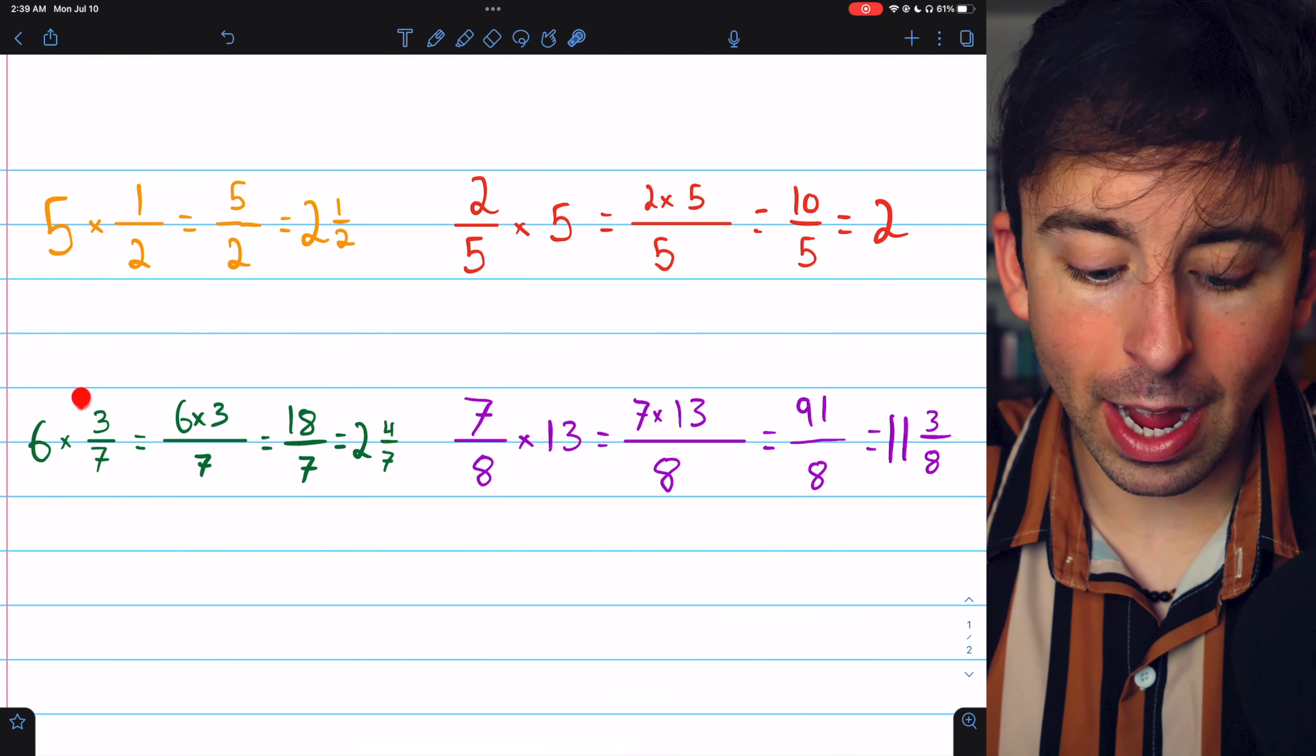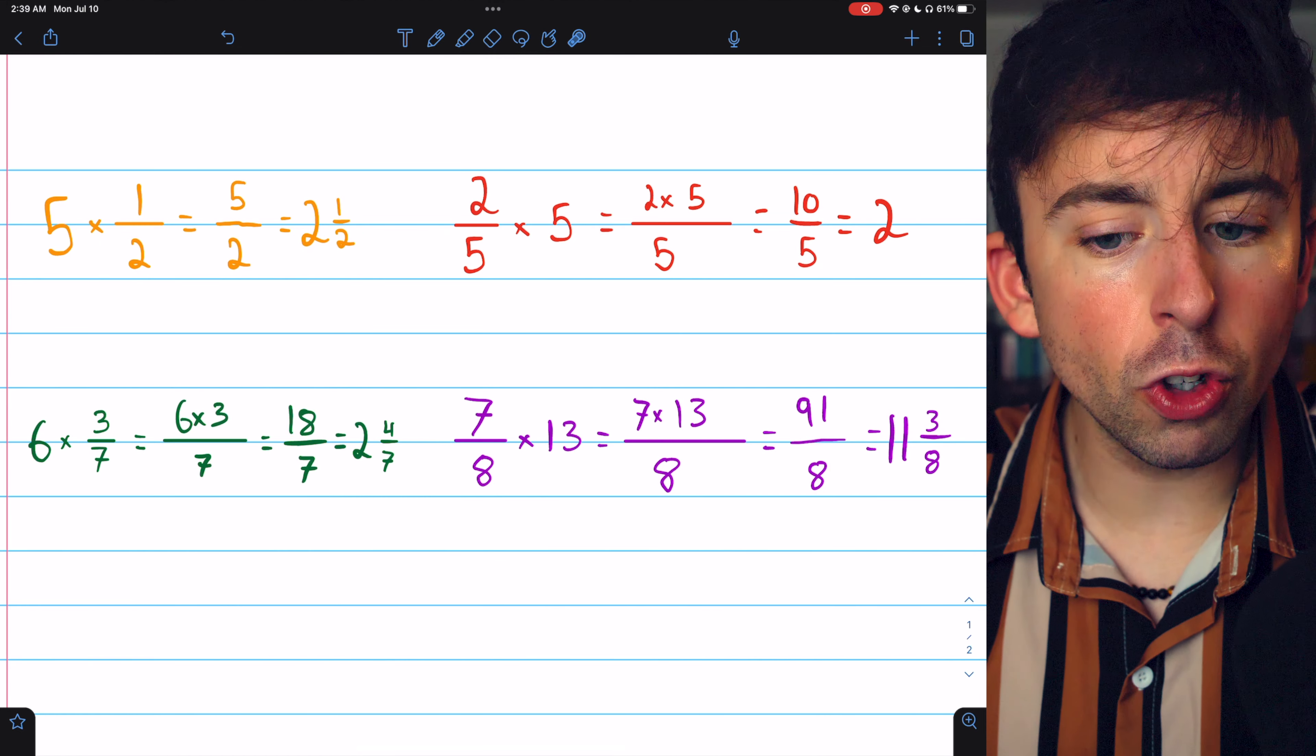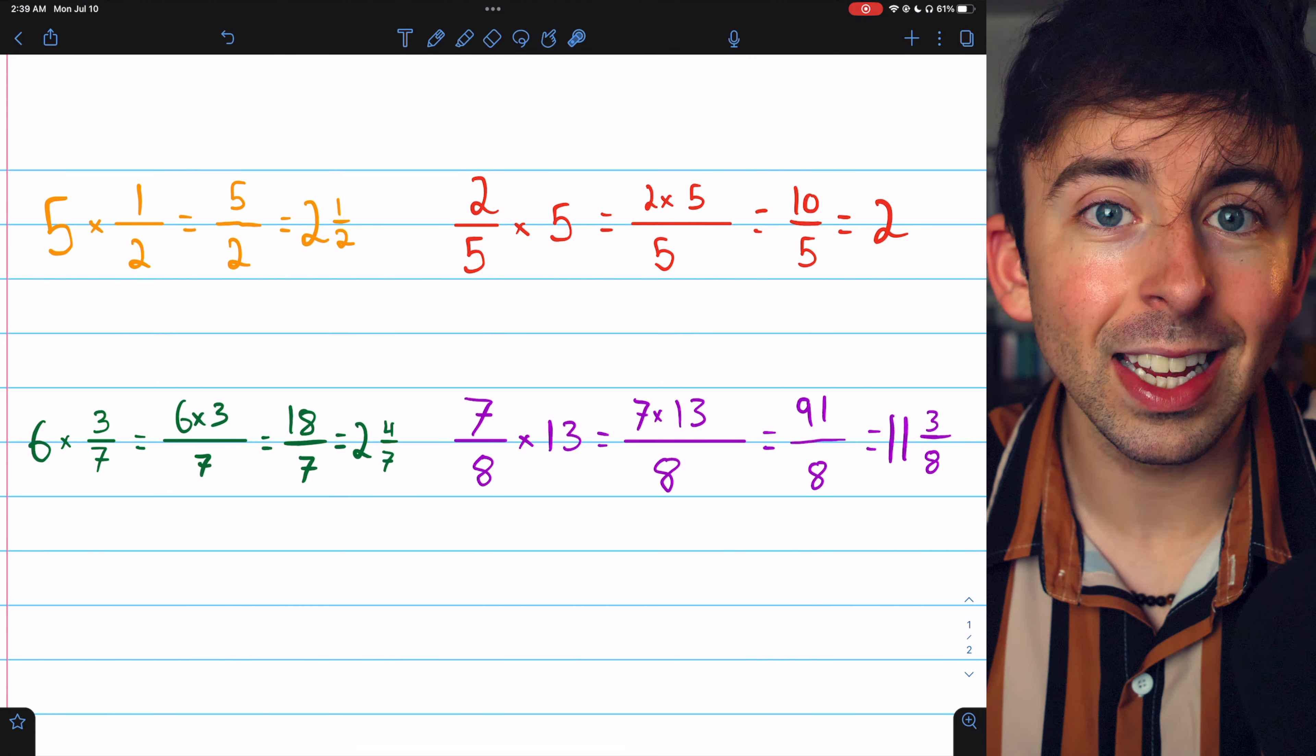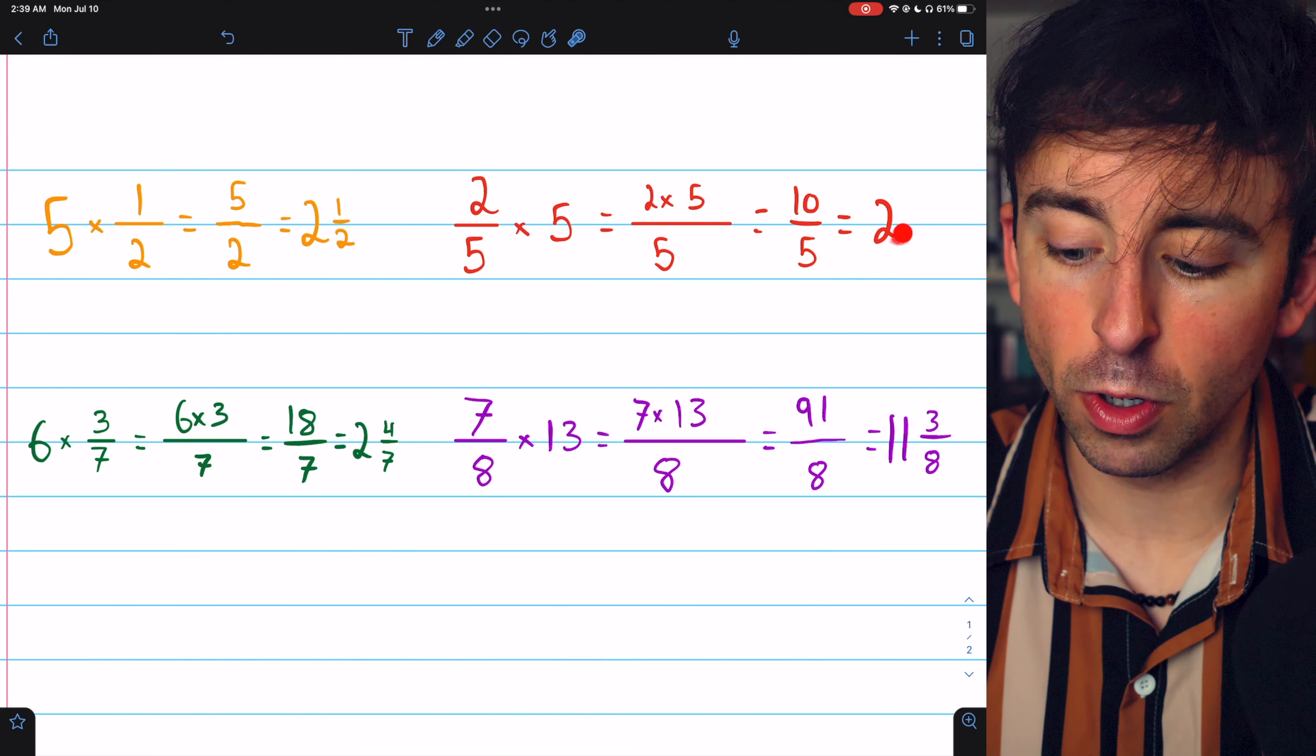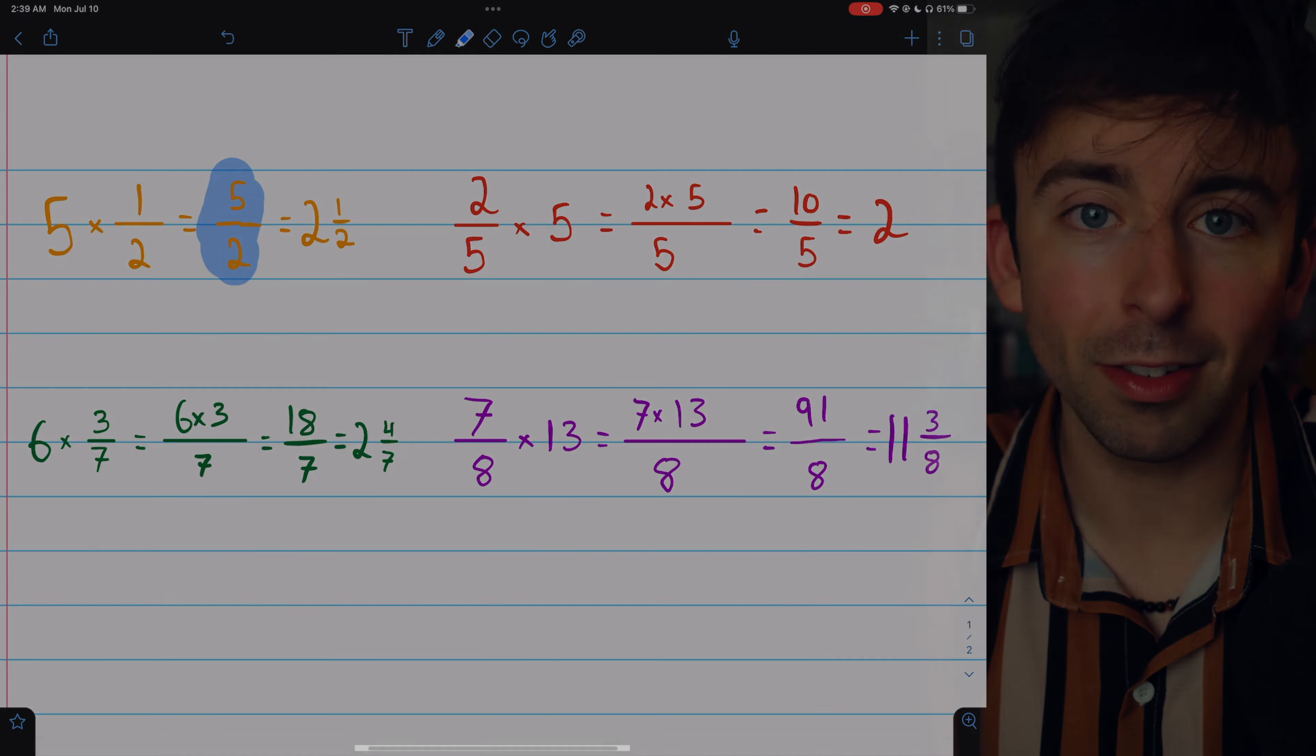To multiply a whole number by a fraction, just multiply the whole number by the numerator. Then if you want, you can write it as a mixed number. If you choose to leave your fraction as an improper fraction, sometimes you will be able to reduce it. So just make sure if you leave it as an improper fraction, you reduce it. 10 over 5 here wouldn't be a great answer because we could reduce it to 2. However, you can't reduce 5 halves. So to me, this would be a perfectly acceptable answer.